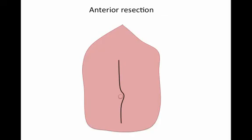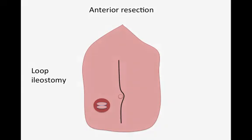If the surgeon has any concerns regarding the primary anastomosis at the time of the index procedure, they can form a loop ileostomy. This gives the anastomosis a chance to heal, and a subsequent water-soluble contrast enema demonstrating good integrity of that anastomosis can mean the patient can have this loop ileostomy reversed in the future — sometimes even as a day case procedure — again avoiding the need for a permanent stoma.